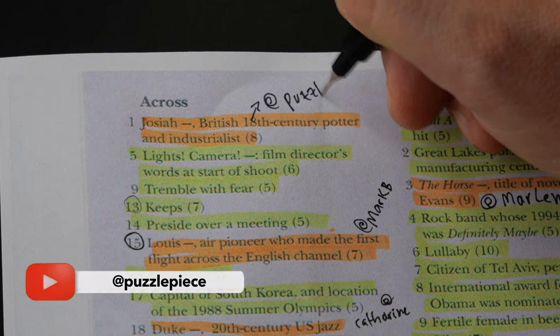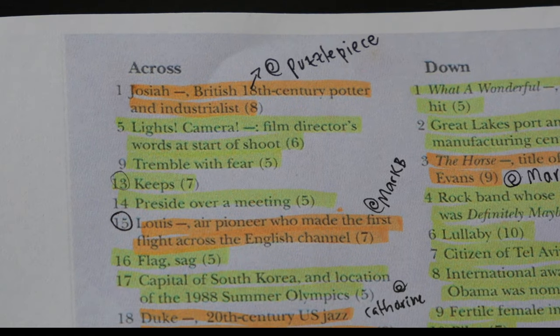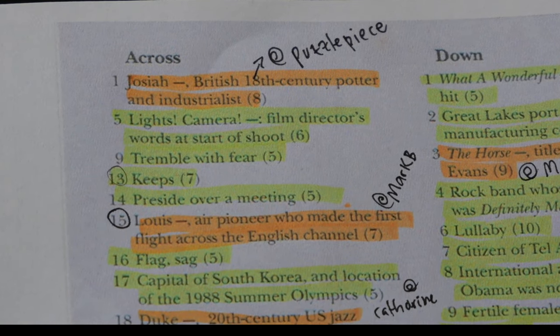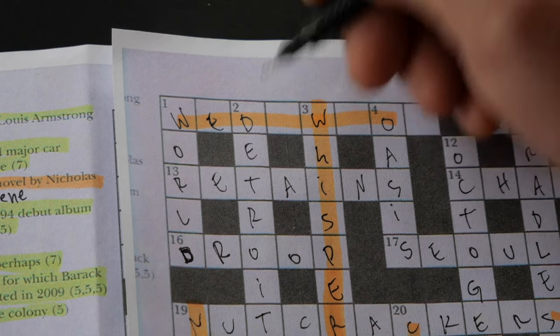Now number one across was suggested by Puzzle Peace. Thank you very much, Puzzle. And the suggestion was Josiah Wedgwood, a famous 18th century potter and industrialist. And we will talk about him later in the video.